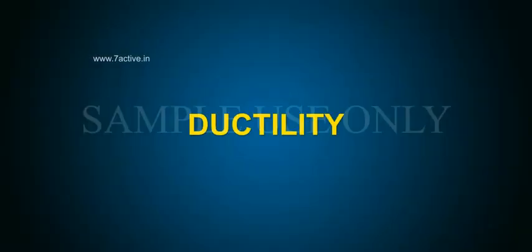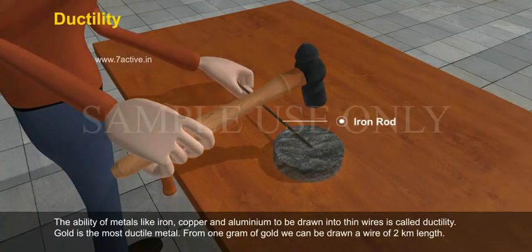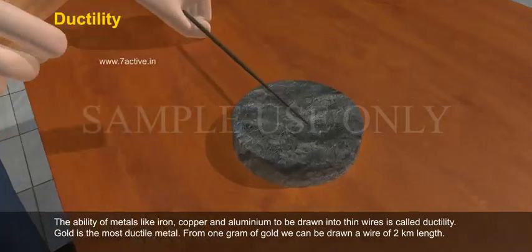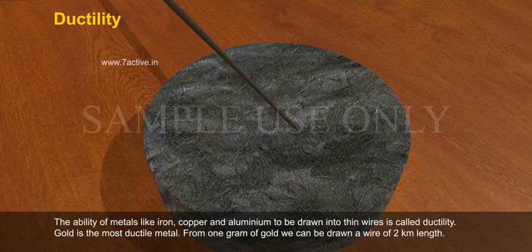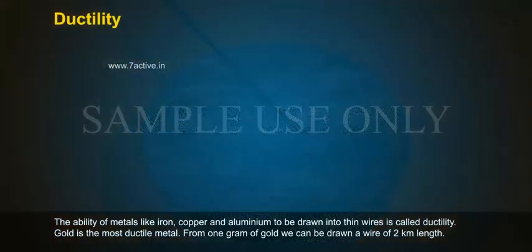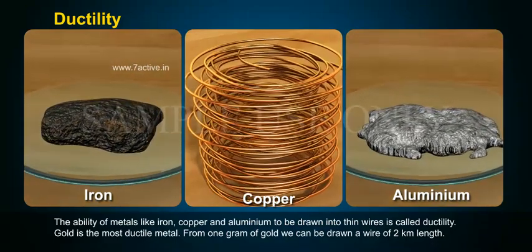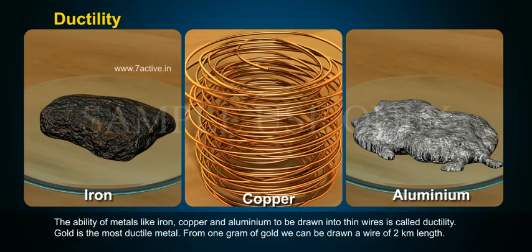Ductility. The ability of metals like iron, copper and aluminium to be drawn into thin wires is called ductility. Gold is the most ductile metal. For one gram of gold, we can draw a wire of two kilometer length.